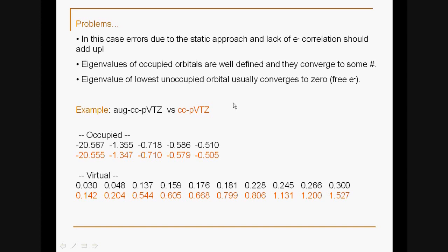Let's have a look at an example. Again, the water monomer case. Here in black are the occupied orbital energies with the augmented cc-pVTZ basis set, compared to the numbers in orange obtained from the cc-pVTZ basis set. The numbers in black are from the augmented basis set, which is larger with more diffuse functions.